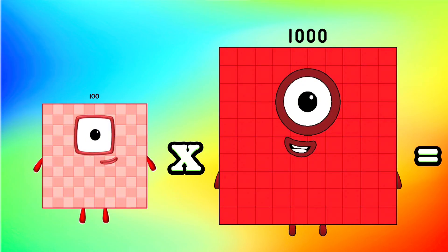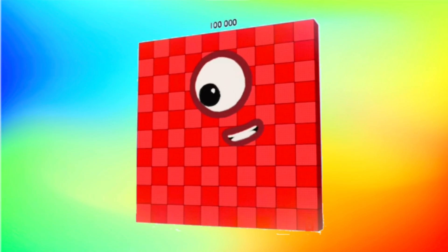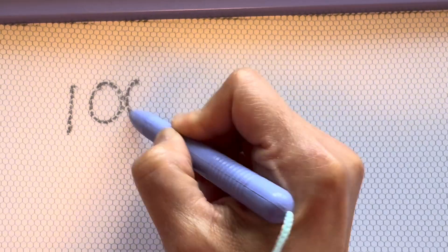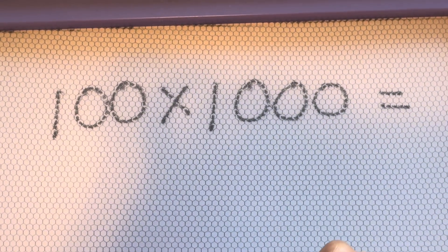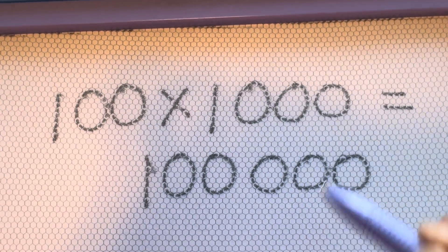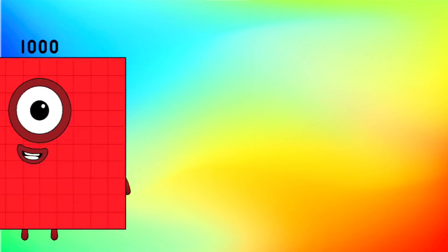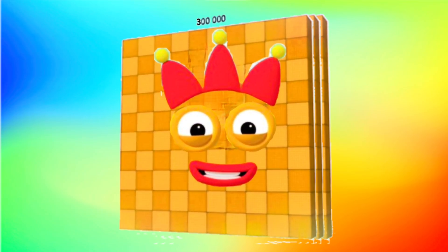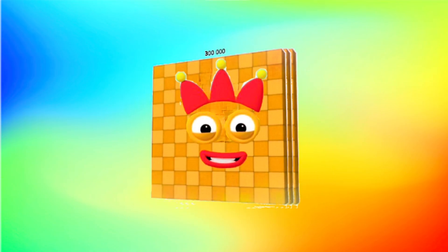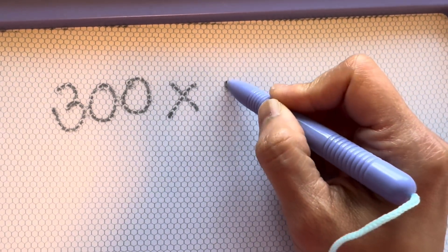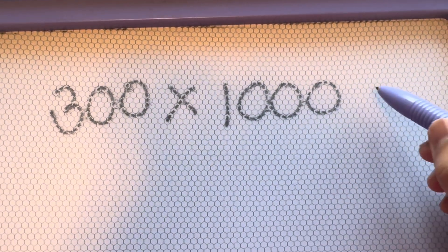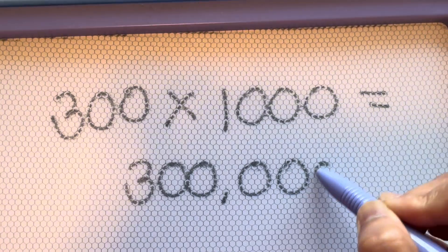100 multiplied by 1,000 is equals to 1,000. 100 multiplied by 1,000 is equals to 1,000. 300 multiplied by 1,000 is equals to 300,000. 300 multiplied by 1,000 is equals to 300,000.